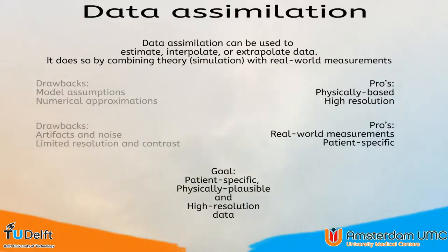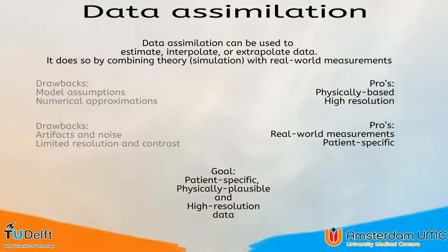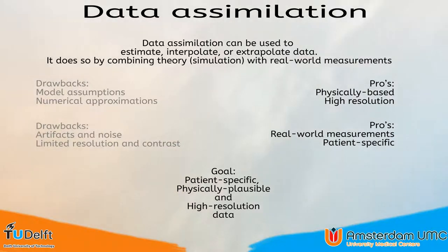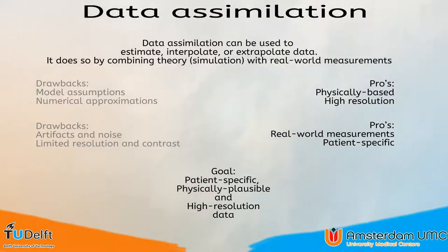Data assimilation can combine simulations with measured data in such a way that the drawbacks are minimized and the pros are combined. This means we can have patient-specific, physics-based, and high-resolution data. Data assimilation combines models with real-world measured data and can be used to estimate, interpolate, or extrapolate data. It is a common approach in many fields such as geoscience, where it is used for instance in numerical weather prediction. In this work, we use data assimilation to combine CFD methods with PC-MRI measurements.